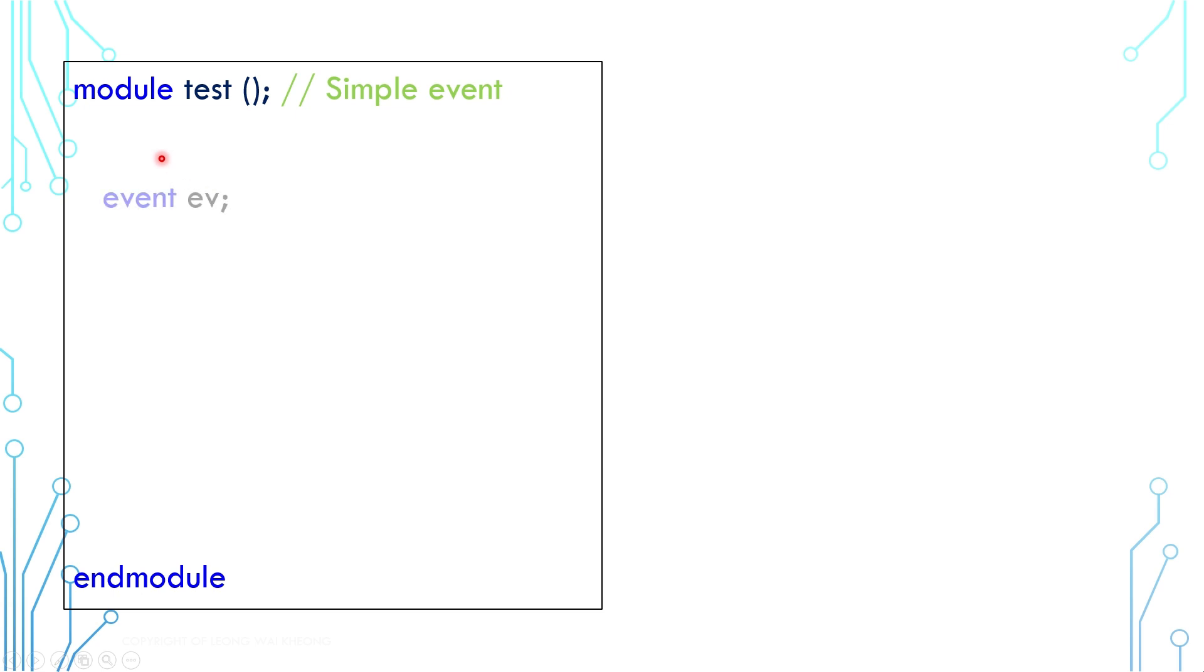Now we can create an event variable like this, and this is how we trigger the event, and this is how we wait or block the event. Event is useful to represent a trigger that depends on special conditions.